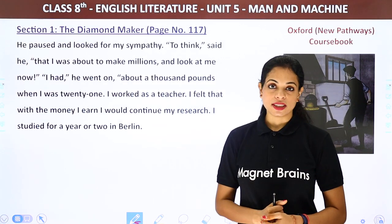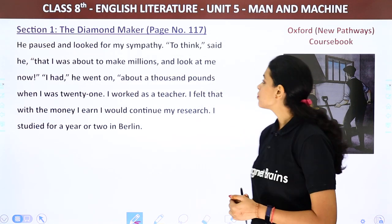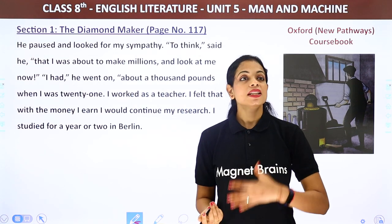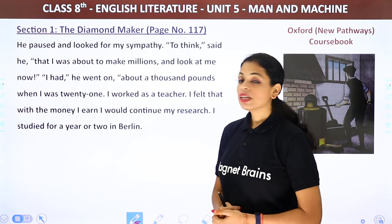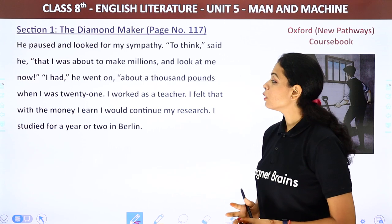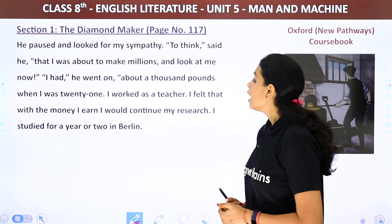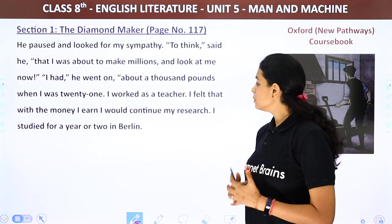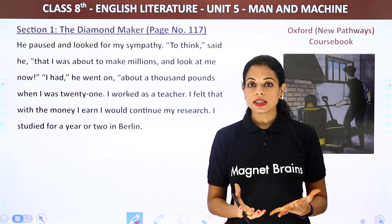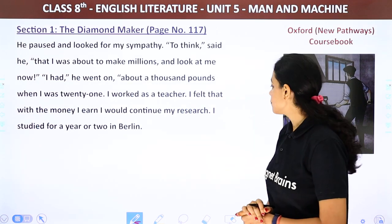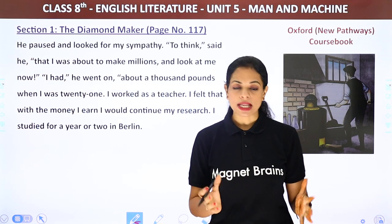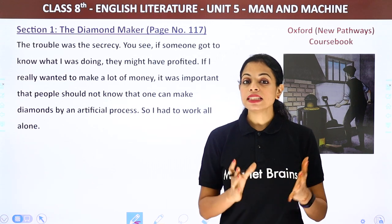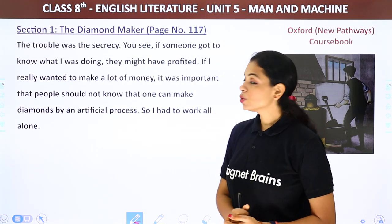He paused and looked for the narrator's sympathy. 'To think that I was about to make millions — and look at me now. I had about a thousand pounds when I was 21. I worked as a teacher and used the money I earned to continue my research. I studied for a year or two in Berlin. But the trouble was the secrecy — I could not take anyone's help, because I had to keep my work secret.'